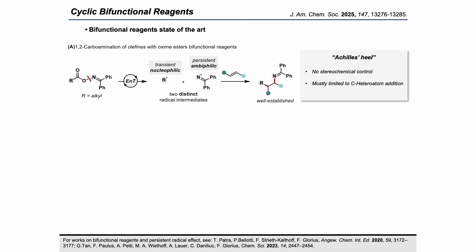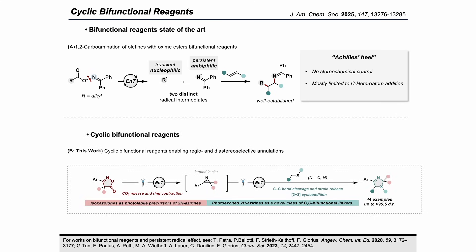However, some limitations are also present. When the olefins are disubstituted, no control of the diastereoselectivity can be achieved and a mixture of diastereoisomers will form. Additionally, in most cases formation of these radical fragments is limited to a carbon-centered transient radical and a nitrogen-centered persistent radical. Usage of two carbon-centered radicals with different polarities and lifetimes is difficult to achieve. The idea behind this project is to overcome these two limitations by employing for the first time cyclic bifunctionals.